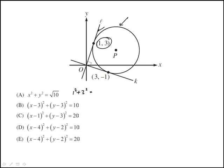So this would be 1 squared plus 3 squared, is that equal to square root of 10? That's actually 10, so this one is out. This would be (1-3)² + (3-3)² = 10, which is 4 because this would be 0. Again, this one is out.